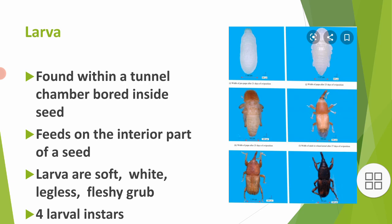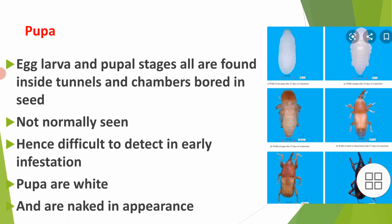The egg, larval, and pupal stages are all found inside tunnels and chambers bored within the seed and are not normally seen from the outside. This makes them difficult to detect in early infestation, as the larval, pupal, and egg stages are hidden inside the seed.